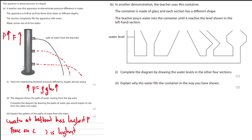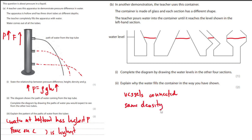In another demonstration, the teacher uses a container filled until the water level reaches a certain point. Complete the diagram — use a ruler to draw it exactly, as all the vessels will be at the same level. Why? Because all of the vessels are connected, and they have the same density. Since P equals rho GH, and pressure and density are the same, H must also be the same — that's why they are at the same level.